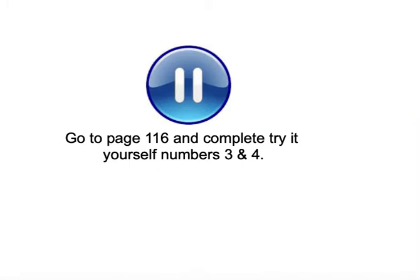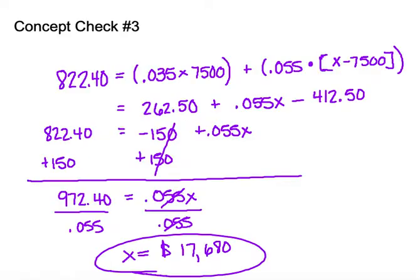Now I'm going to ask you to pause the video again and go to page 162. You're going to complete concept checks 3 and 4 on that page. Take your time and do those carefully. In concept check number three, the graduated commission was at 3.5% at the first level and 5.5% at the second, with the unknown being x minus $7,500. Going through the process of solving, the total sales should be $17,680.